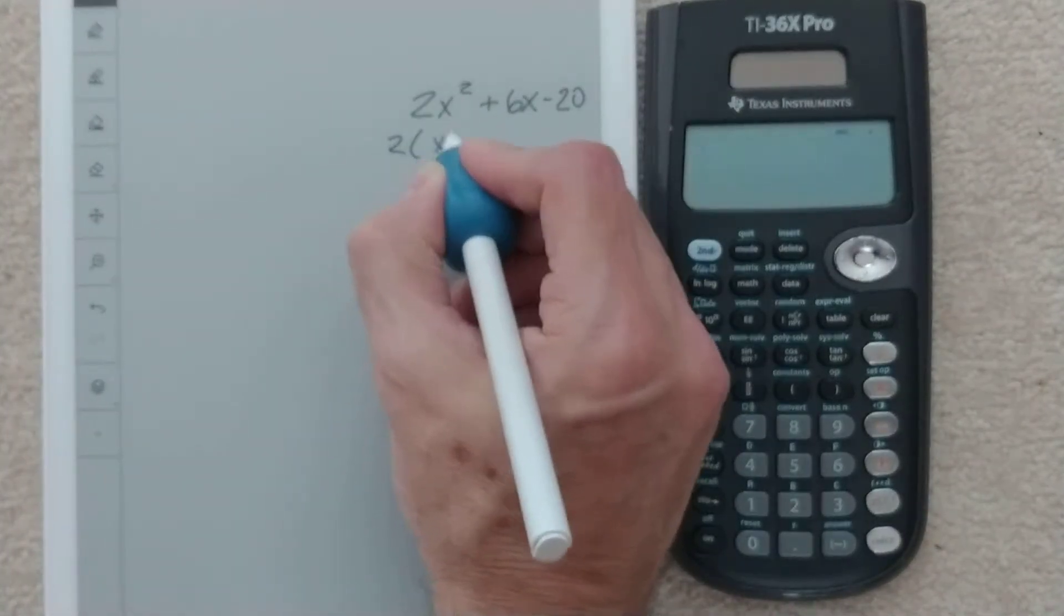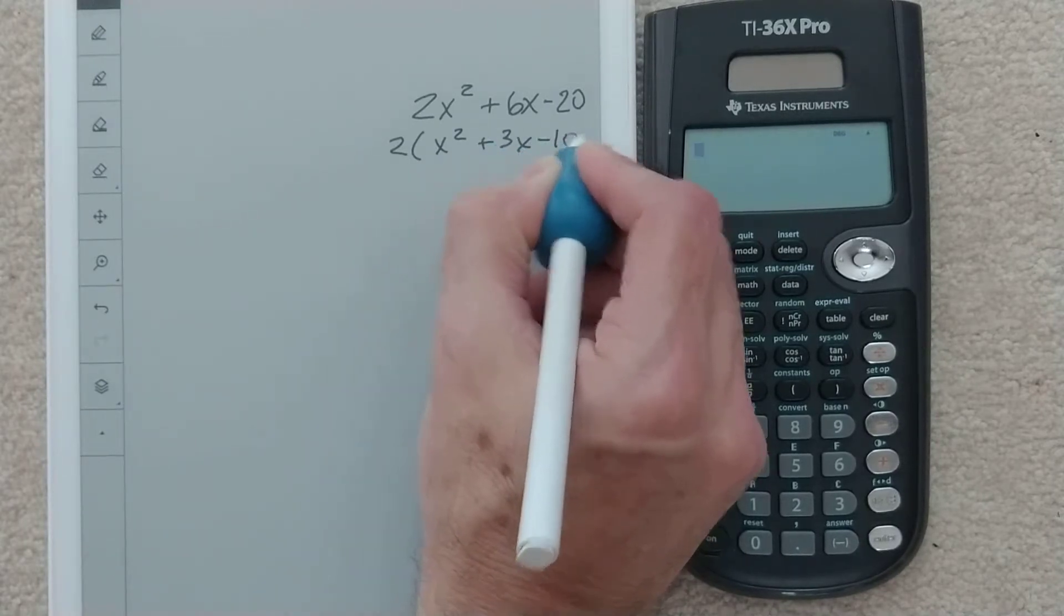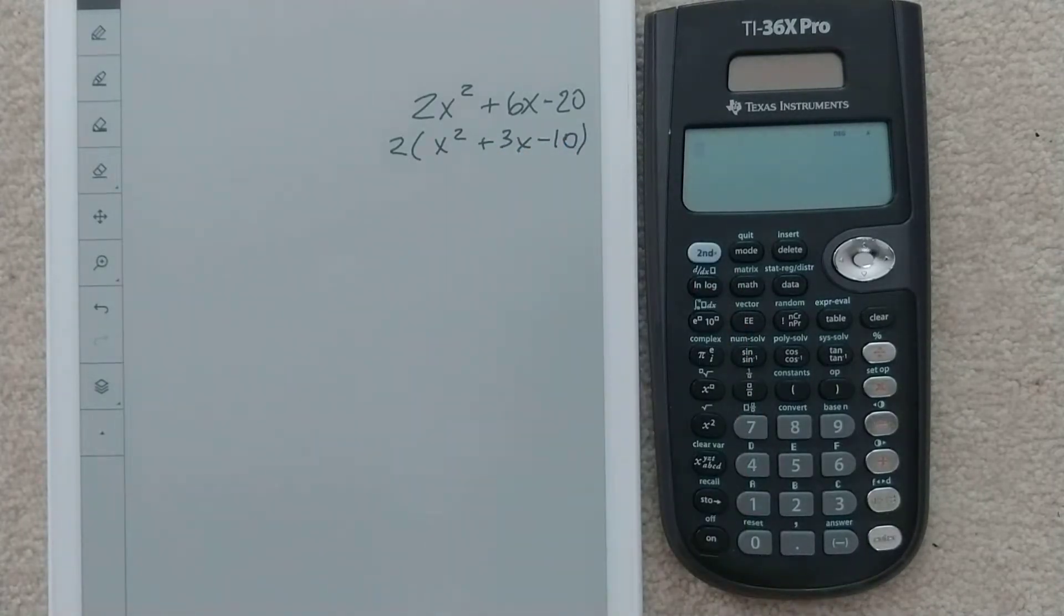I'm going to do that, and I'll be left with x squared, 3x, and negative 10. Again, it doesn't change your answer, but this is just the best approach.